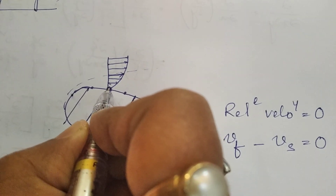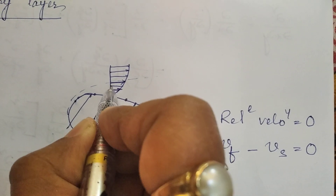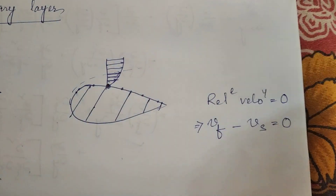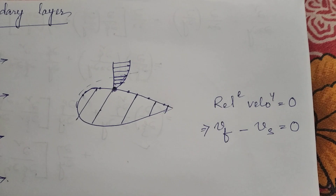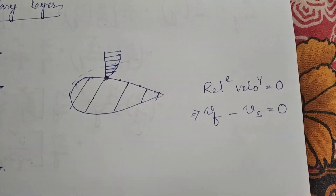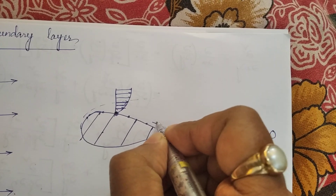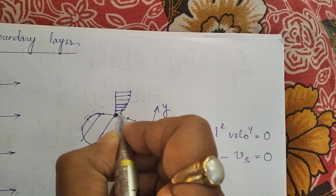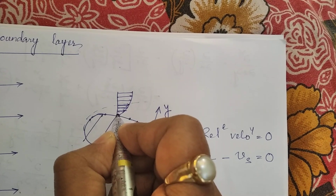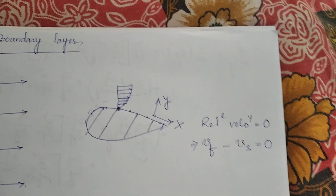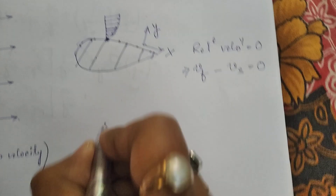As we move away from the surface in the perpendicular direction, the velocity increases. At the surface the velocity is zero, then it keeps increasing up to a certain region. But beyond that region, the velocity will not change along the perpendicular direction. If we consider the x-axis along the length of the surface and y as the perpendicular direction, the velocity increases only up to a certain level, and beyond that level there is no change in the velocity profile.